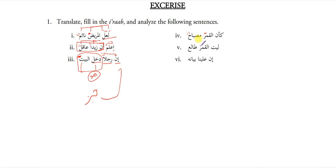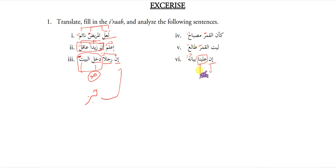Layt al-qamara tali'un — maybe the moon is rising. Inna alayna bayanahu. Bayanuhu — Inna: huruf-e-mushabbabil fail. Alayna starts with ala harf-e-jar, so it is khabar of Inna which is muqaddam, coming first. And bayanuhu is muzaaf muzaafilaih, ism of Inna, which comes later.